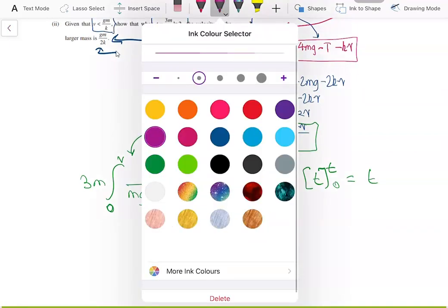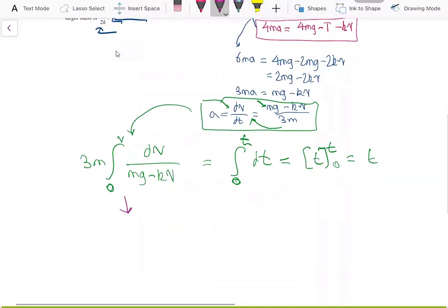The left hand side integral, since we have a v in the denominator, this will be quite similar to just taking log of v, something related to log of v will be the indefinite integral or antiderivative. So in fact, it will be log, or I'll write ln, ln of absolute value mg minus kv.